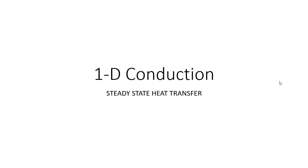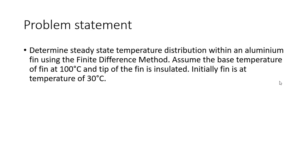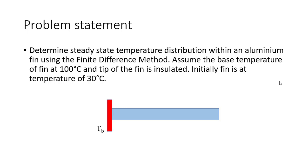Before going into the detail, let us first see the problem statement. We have to determine the steady state temperature distribution within an aluminum fin using the finite difference method. We assume the base temperature of the fin as 100 degree centigrade and the tip of the fin is insulated. Initially the entire fin is at a temperature of 30 degree centigrade, and the cross section area of the fin is circular with diameter D.